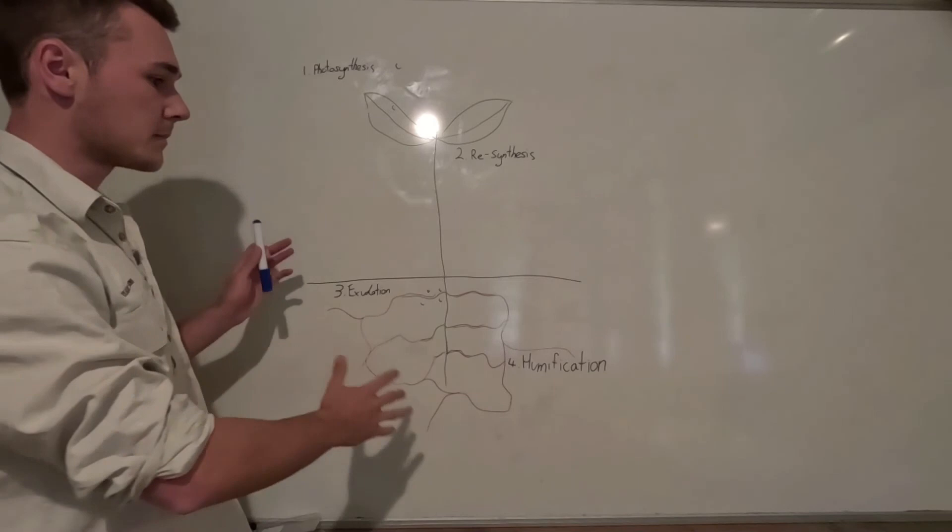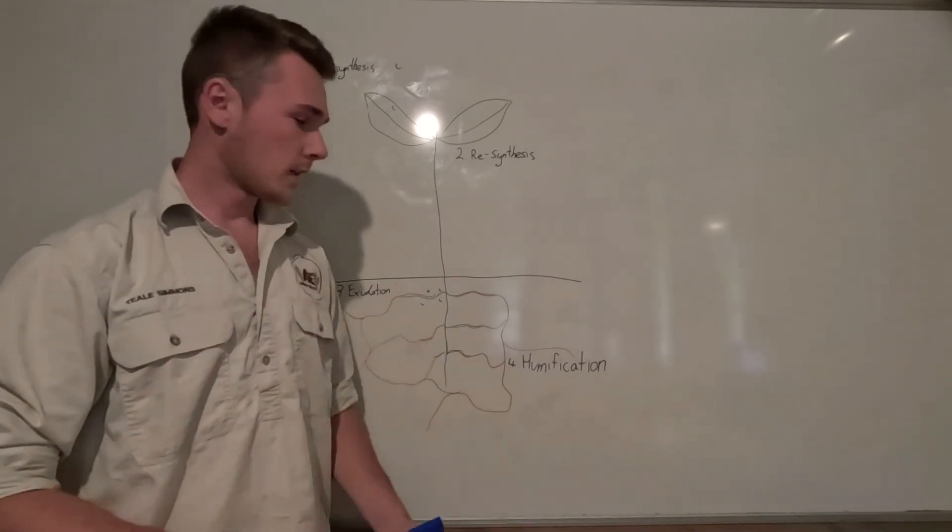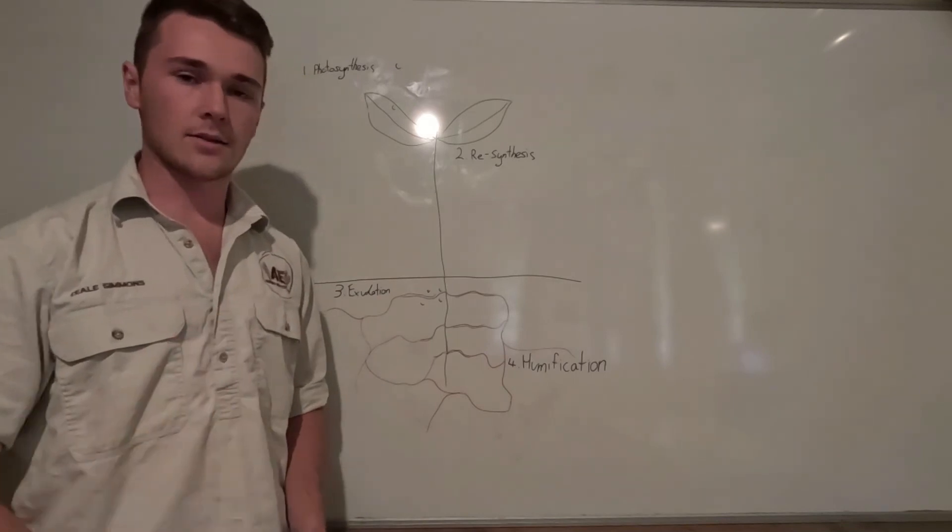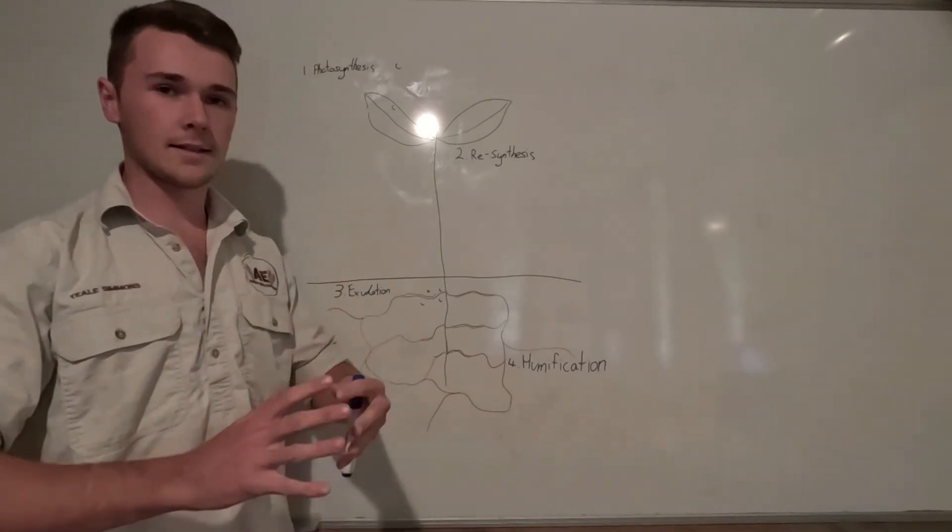Understanding how to maximize this process so we can make more and more humic substances is key to regenerative agriculture. So there you go, that is the liquid pathway in a nutshell.